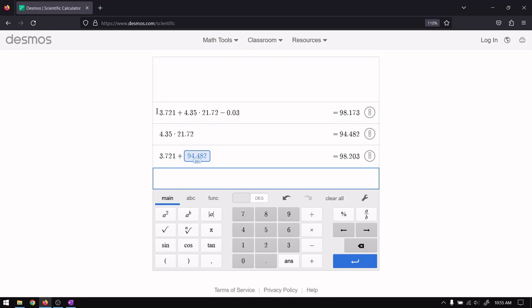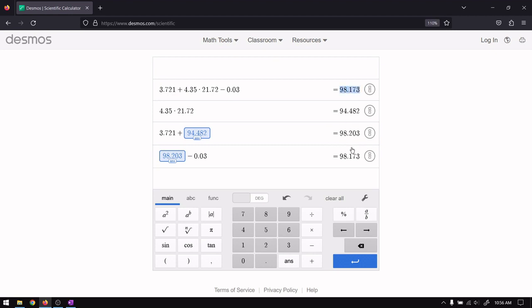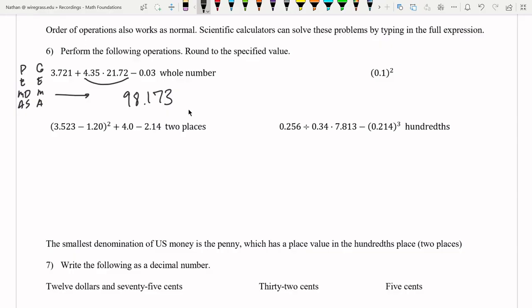And so we get 98.203. And then I need to, so that was this portion of the expression done. Now I need to subtract off the 0.03 from that. So you can see here, I get 98.173. So you can do in parts if you want each part individually, and get an answer, or you can just type the entire thing in and then it will calculate that for you. As long as it's a scientific calculator, it will do this because it has order of operations already in it.